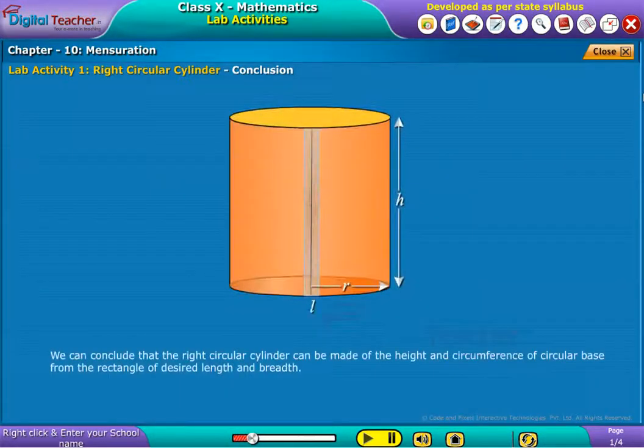We can conclude that the right circular cylinder can be made of the height and circumference of circular base from the rectangle of desired length and breadth.